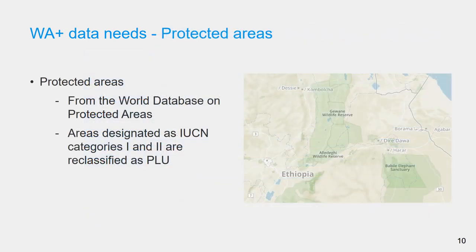In some databases, we may not have information on protected areas. In such cases, the World Database on Protected Areas can be consulted. In Water Accounting Plus, areas designated by the International Union for Conservation of Nature, IUCN, as categories 1 and 2 are classified as protected land uses.